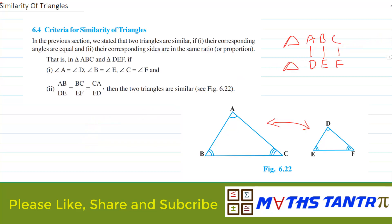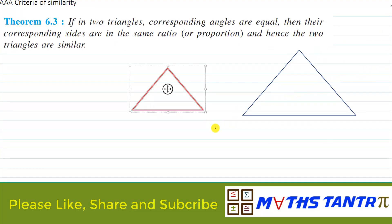The first criteria is written in the form of Theorem 6.3 in the textbook. If in two triangles corresponding angles are equal, then their corresponding sides are in the same ratio and hence the two triangles are similar.